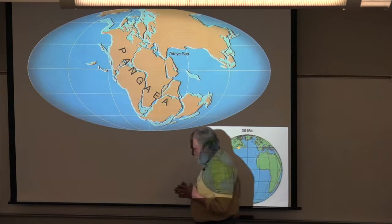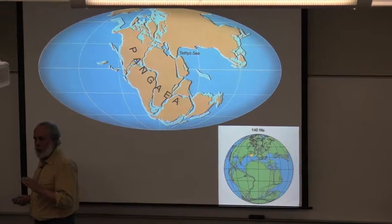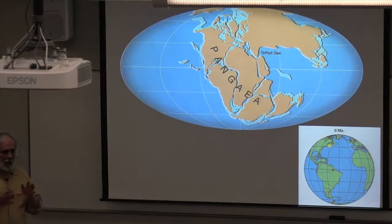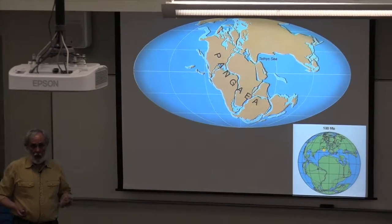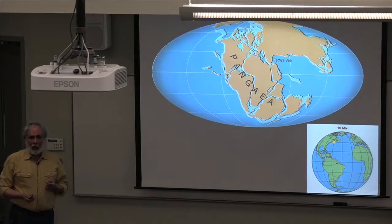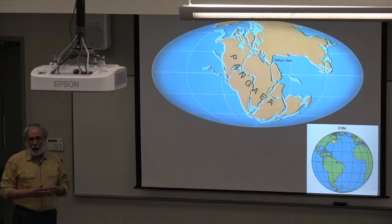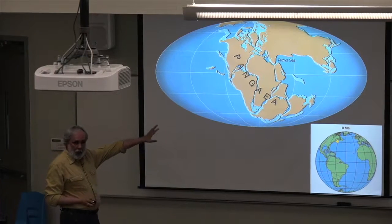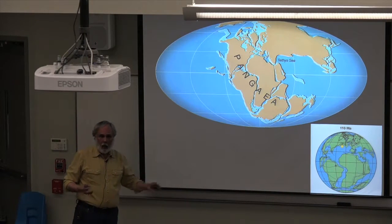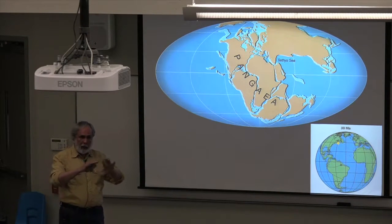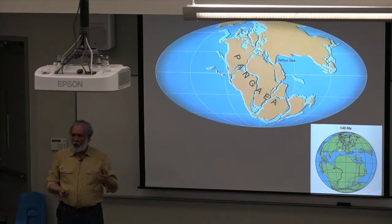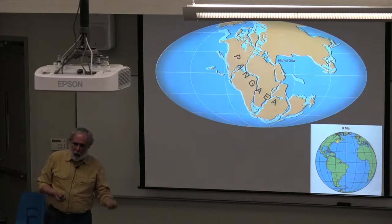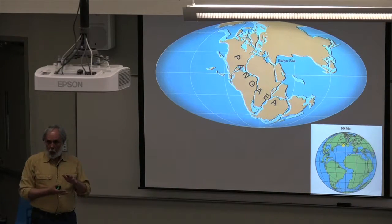Eruptions today — volcanic activity we see today — are largely a function of plate tectonics. If we look at plate tectonic boundaries, those are clearly delineated areas of volcanic activity. We live on a mobile planet. Going back about 200 million years ago, all the land masses on Earth were combined into a supercontinent referred to as Pangea. That began to break apart, and continents started to move about the globe. This goes back originally to Alfred Wegener's concept of continental drift. But in reality, it's not the continents that move — it's tectonic plates that move.